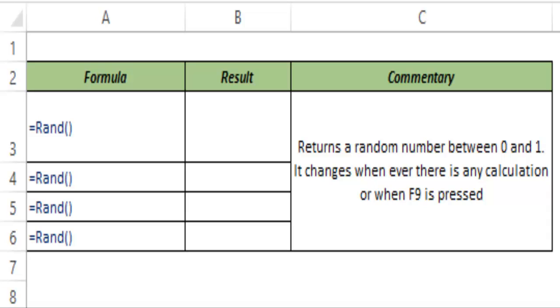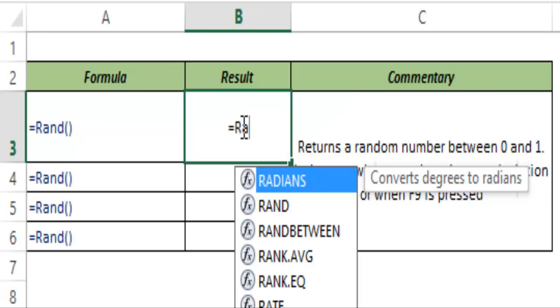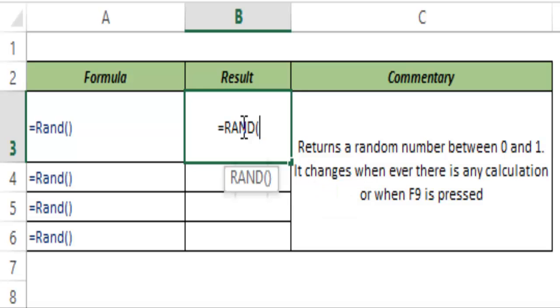This is one of those functions that does not take any argument as input. Let me show you how RAND works. I type equals RAND and hit TAB to autocomplete the function. You can see this does not take any argument, so you can simply close the parenthesis. Now when I hit CTRL+ENTER, this gives me a random number between 0 and 1.